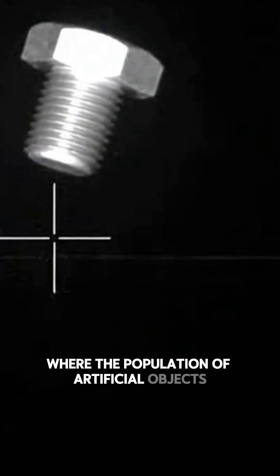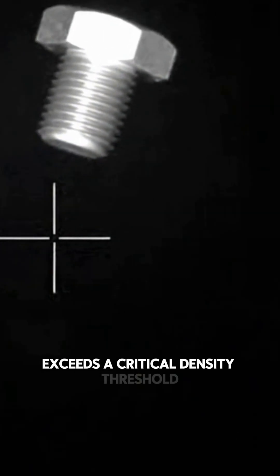This is the Kessler syndrome. A dynamical instability where the population of artificial objects exceeds a critical density threshold. It is not a choice, it is a phase transition.